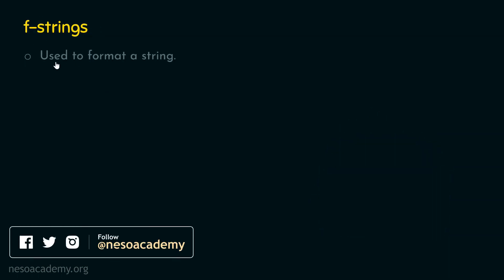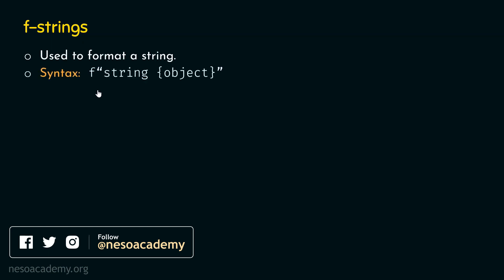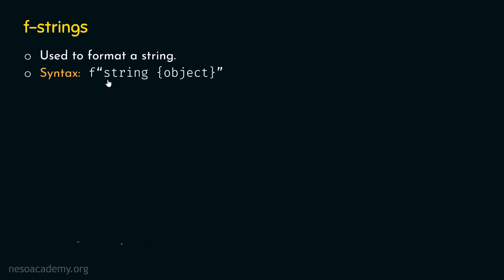An f-string is used to format a string. With the help of this technique, we can format a string. The syntax that we need to follow is: we need to type f first, then within double quotes, we need to add our string. We can also add an external object within curly braces.